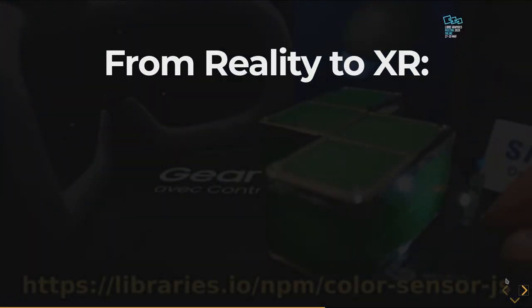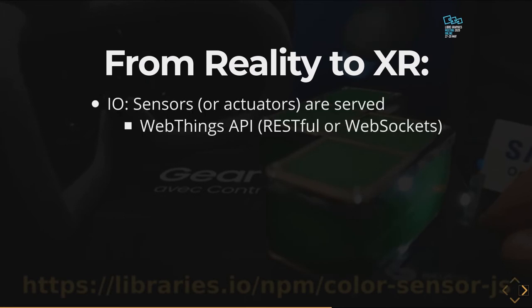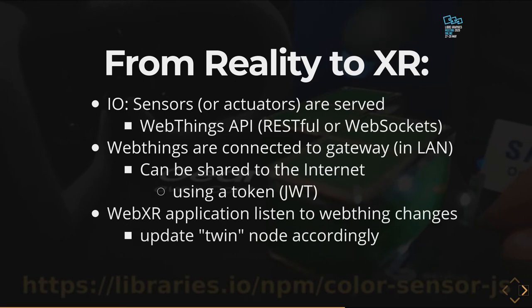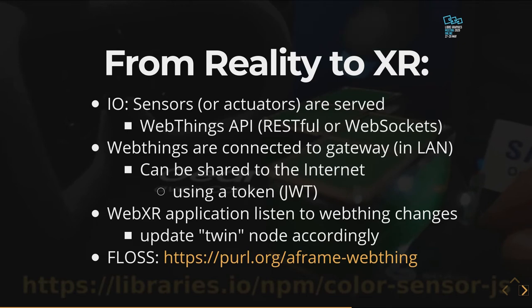So how is this possible? It's pretty simple. From a sensor, I'm providing a web API using the Web Things API, which provides real-time WebSocket or HTTP verbs. I can connect this thing to a gateway, then share my device securely to the internet using a web token. Another XR application can then listen to updates of the actual thing and update the 3D model accordingly. So it works in both directions, and you can use this component as an example.